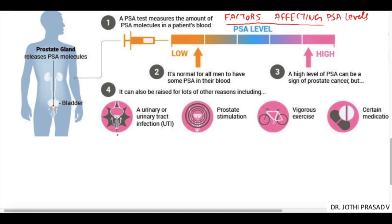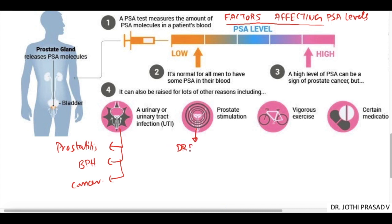Coming to factors affecting PSA levels, it can be affected by varied factors, starting from any infection of the prostate — be it UTI, prostatitis, BPH, or malignancy. It can also be affected by prostatic stimulation such as digital rectal examination, cystoscopy, TURP, catheterization, or even a prostatic biopsy.